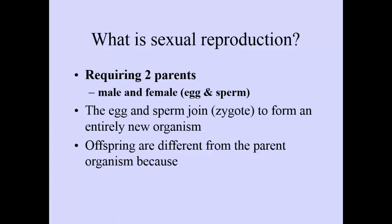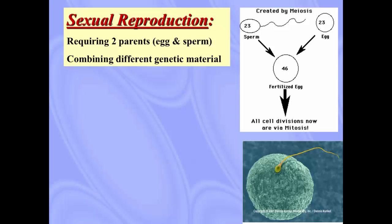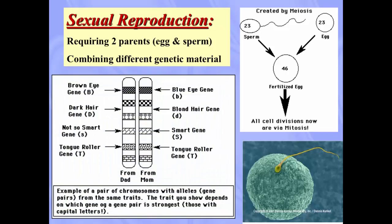Now, sexual reproduction requires two parents — a male and a female — or in cellular terms, an egg and a sperm. When the egg and sperm join, something called a zygote is formed, and that's what the new organism starts out as. Before we were even embryos, at the first stages of our lives, we were just an egg cell and a sperm cell fused together as a zygote. We attached to the uterine wall, grew into babies, were born, and now here we are. Offspring are different from the parent because of the genetic variance that we spoke about earlier — we are combining different genetic material.